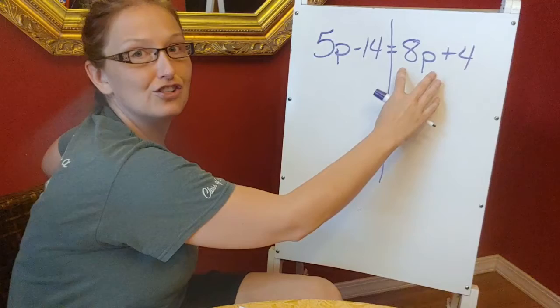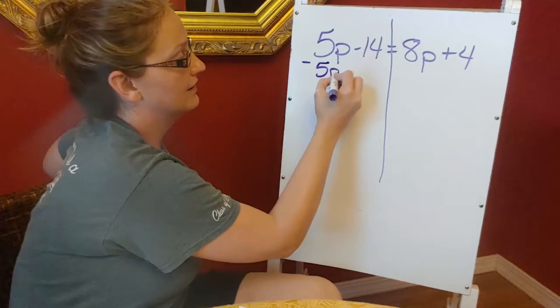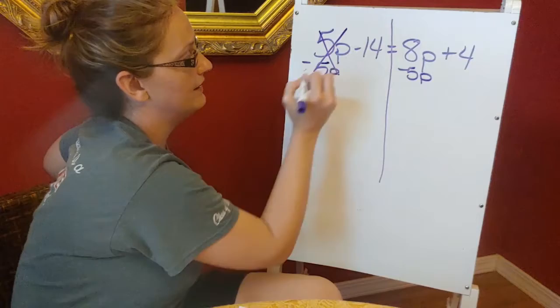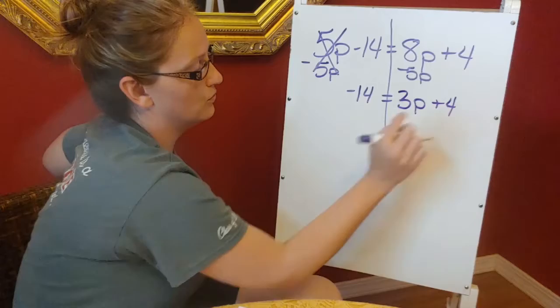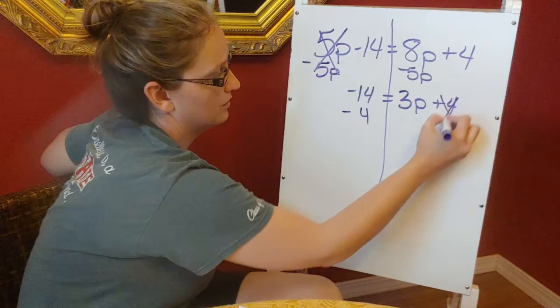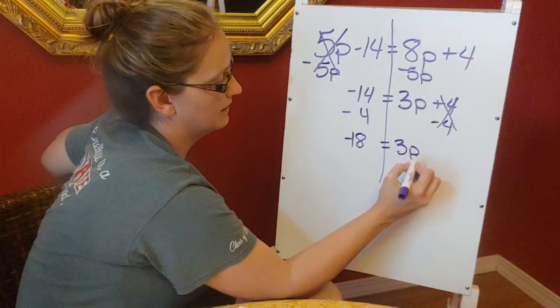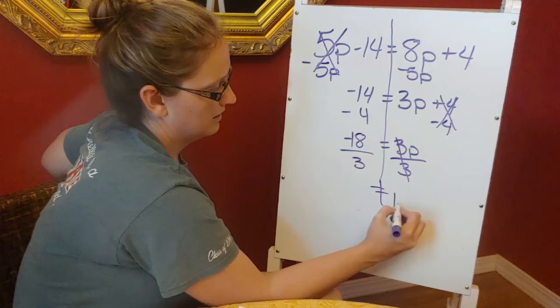So this 5p right here, I'm going to subtract it from both sides. 5p minus 5p gives me 0. I'm going to drop down my negative 14. 8p minus 5p gives me a 3p plus 4. I'm going to subtract 4 from both sides. So negative 18 equals 3p. And then divide by 3. To get p by itself, negative 18 divided by 3 still gives me a negative 6.